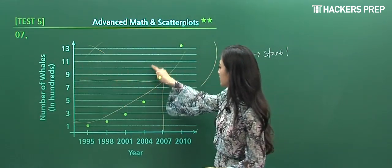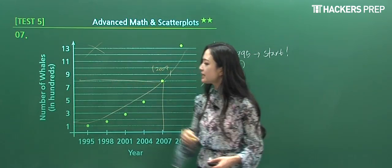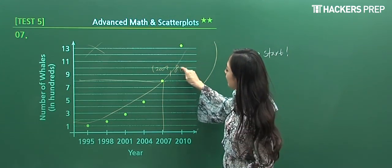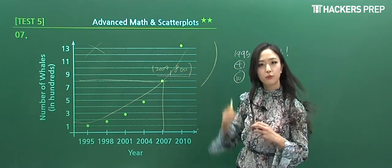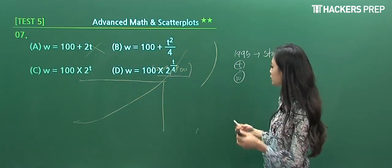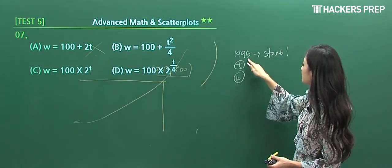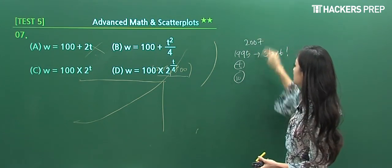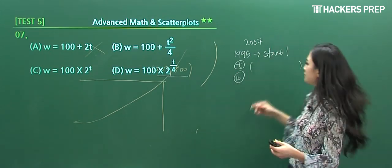It refers to the year 2007, and the population is 800 whales. We can use this point of interest and plug it in to see which answer matches. Since t is the number of years after 1995, when we're looking at 2007, how many years have passed? Twelve years.